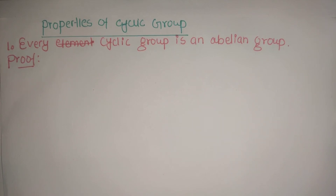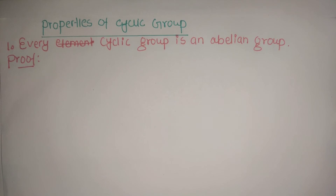Hello everyone. In the previous video, we explained what a cyclic group is, and we also explained the order of an element and the order of a group. So today, based on the definition of cyclic group and the meaning of order of element, we will look at the properties of cyclic group.